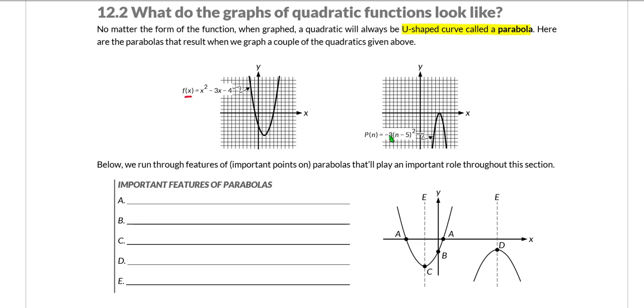So we can see here f(x) and p(n), and these are two of the functions we saw at the top of the page that were examples of quadratic functions. These two functions, f and p, are graphed. And we can see that they both come out to be these typical U-shaped curves that all quadratic functions look like when they are graphed on the xy plane.